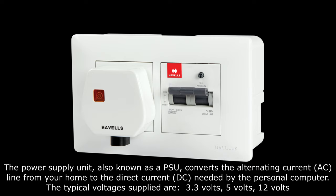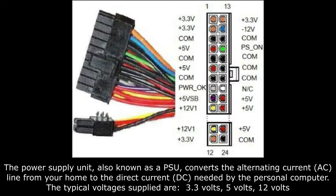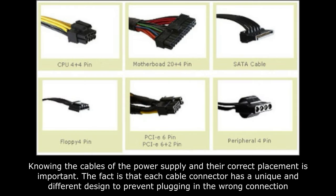The power supply unit, also known as a PSU, converts the alternating current, AC, line from your home to the direct current, DC, needed by the personal computer. The typical voltages supplied are 3.3 volts, 5 volts, and 12 volts. Knowing the cables of the power supply and their correct placement is important. Each cable connector has a unique and different design to prevent plugging in the wrong connection.